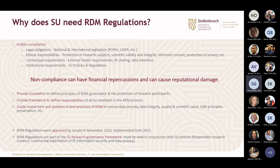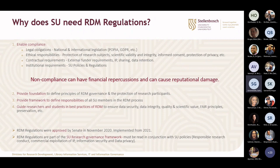The regulations also provide a foundation to define the principles of governance at the university, including the protection of research participants. We provide the framework to define the responsibilities of everybody at the university in the process, and we want to guide researchers and students in the best practices of RDM. The research data management regulations were approved by Senate in November 2020, and we are in the process of reviewing and editing that. The new version will go into the cycle of approval later in the year. The RDM regulations are also part of the research governance framework of the university, and they refer to other policies and regulations that people must take note of.